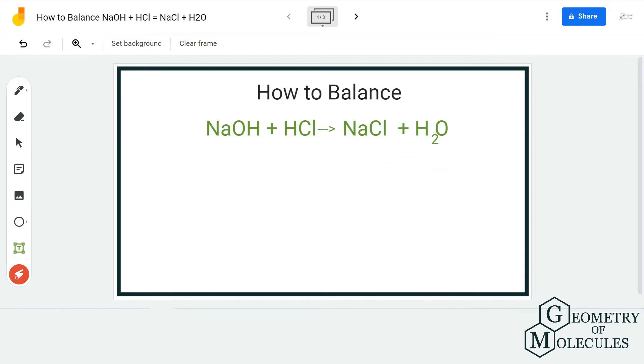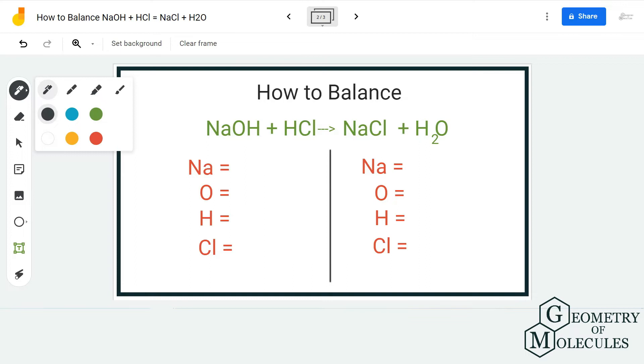To find the balanced equation for this reaction, we first need to count the number of atoms on both the reactant side and product side individually. This helps us understand the coefficients that we need to put on both sides to balance this equation.